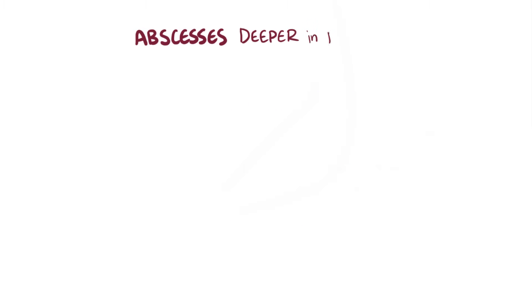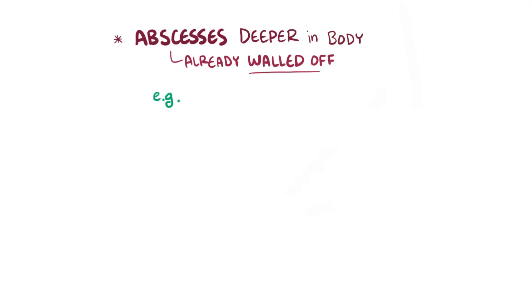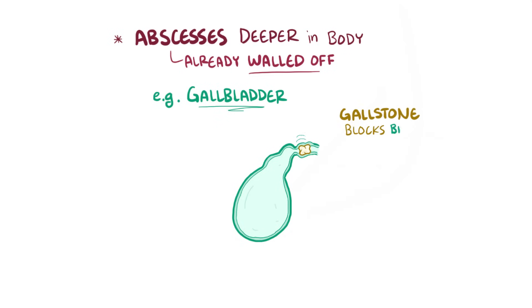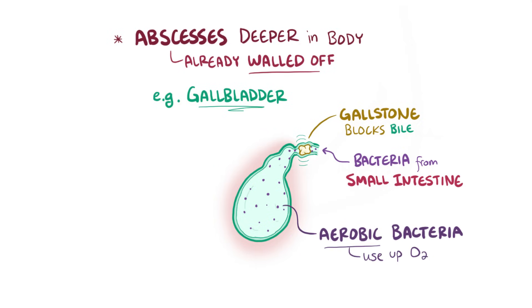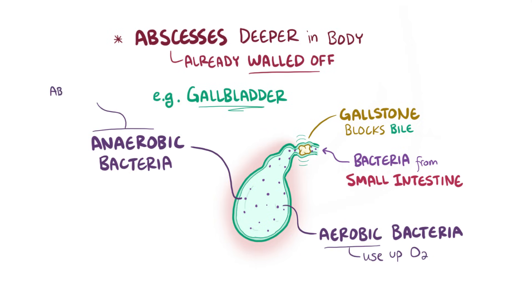In contrast to an abscess near the skin, ones that originate deeper in the body often happen in spaces that are already relatively walled off. For example, in the gallbladder, if a stone blocks bile from flowing out, it essentially becomes a new home for bacteria. Bacteria from the nearby small intestine can easily sneak past the stone, crawl into the gallbladder, and multiply, which causes an inflammatory response, and eventually an abscess might form. Typically, these deep infections are a mix of aerobic bacteria that use up all the available oxygen and anaerobic bacteria that can only live in its absence.